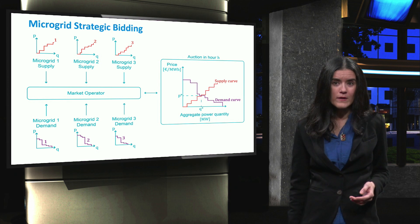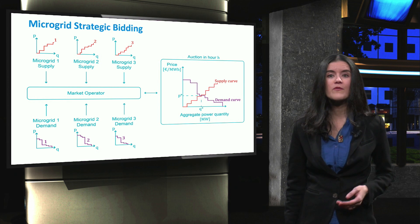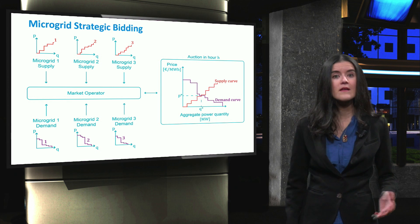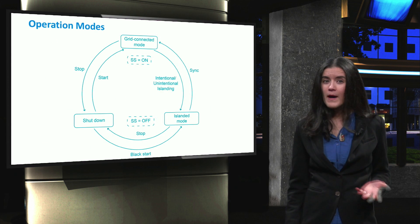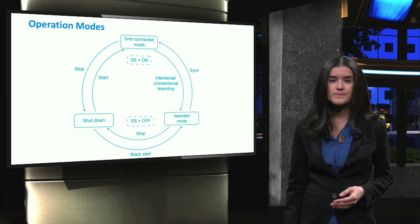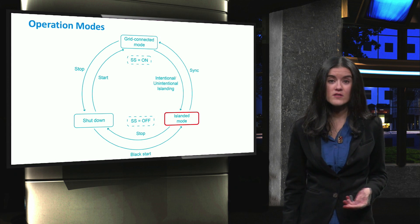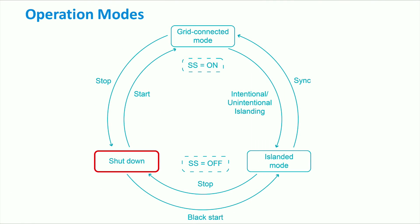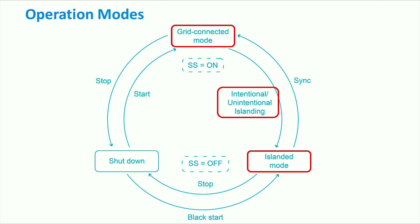Finally, the microgrid should always be able to perform a seamless transition between the interconnected and islanded mode. Microgrids can operate in different modes — for example, grid connected, islanded, and shutdown. A grid connected microgrid is transferred to an islanded mode either by intentional or unintentional islanding. The intentional islanding is performed mainly during scheduled maintenances at the upstream network, where the transition from the grid connected to the islanded mode is conducted in a controlled way.